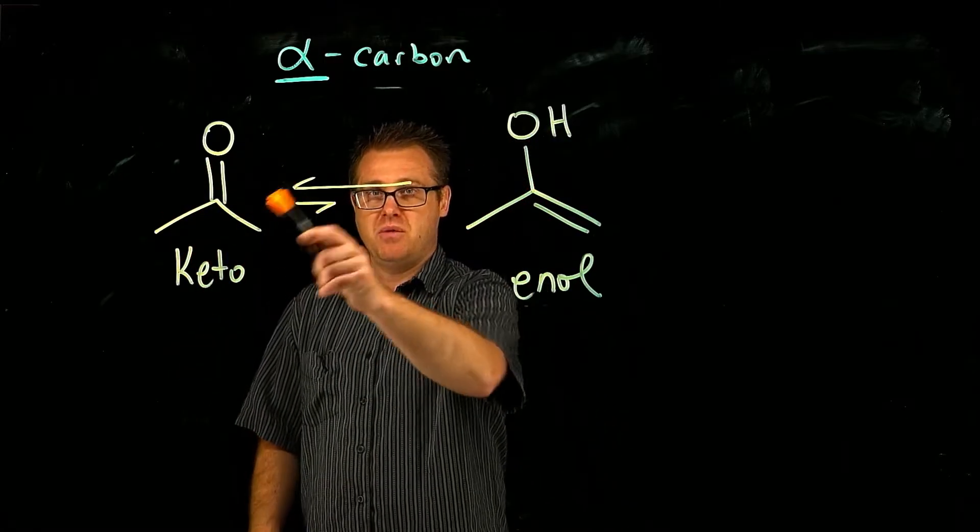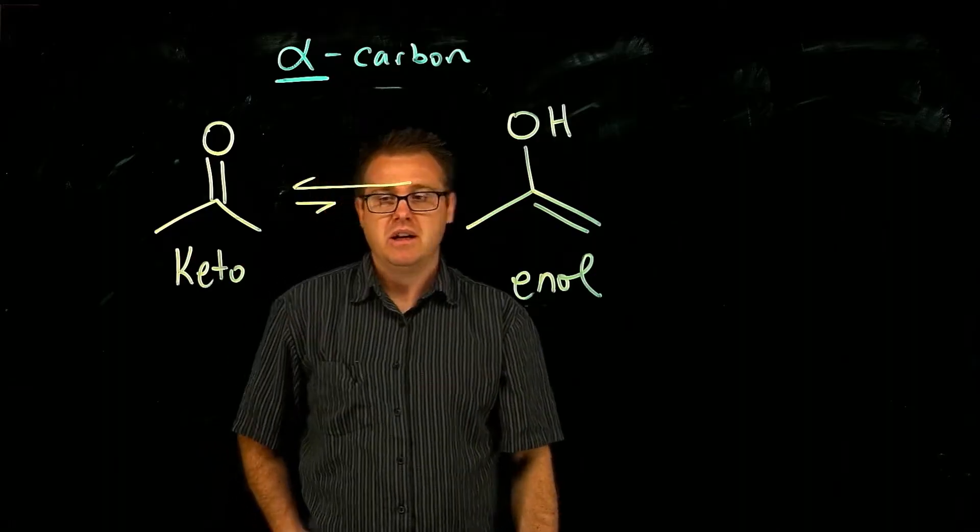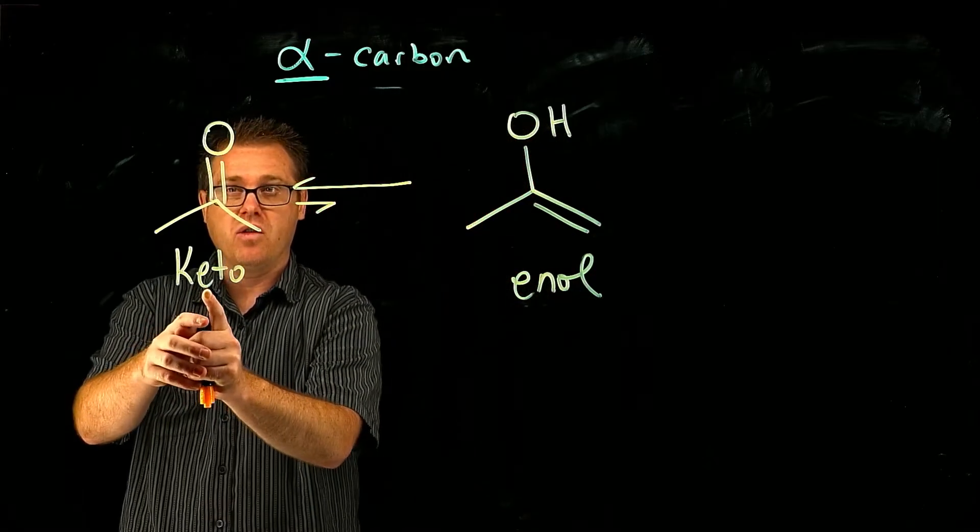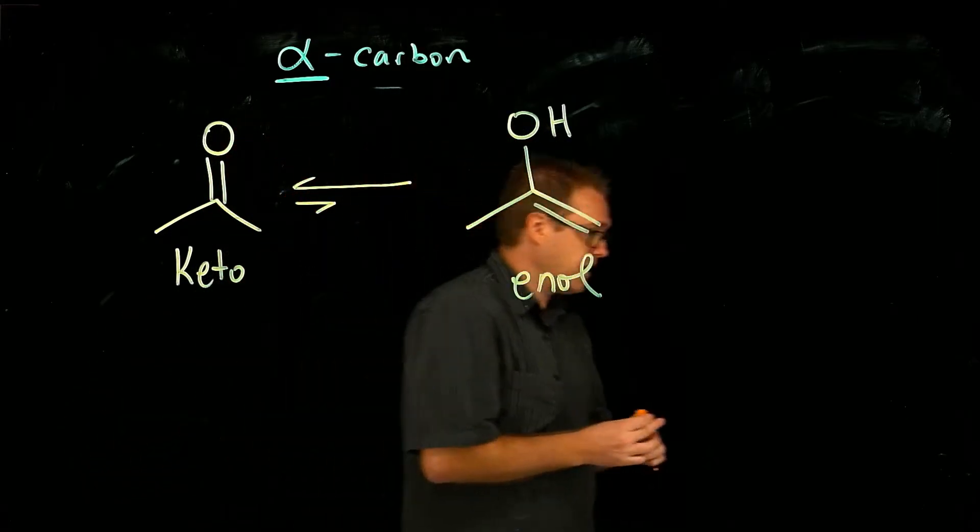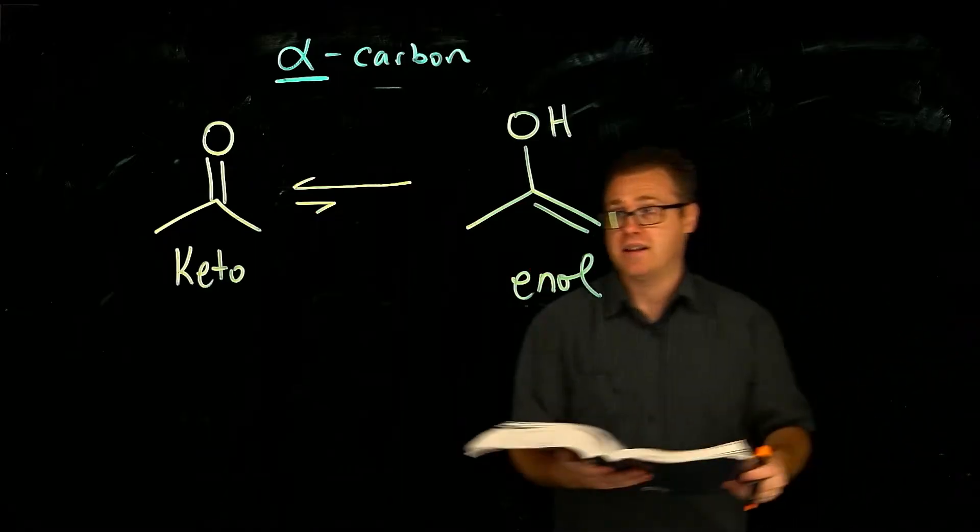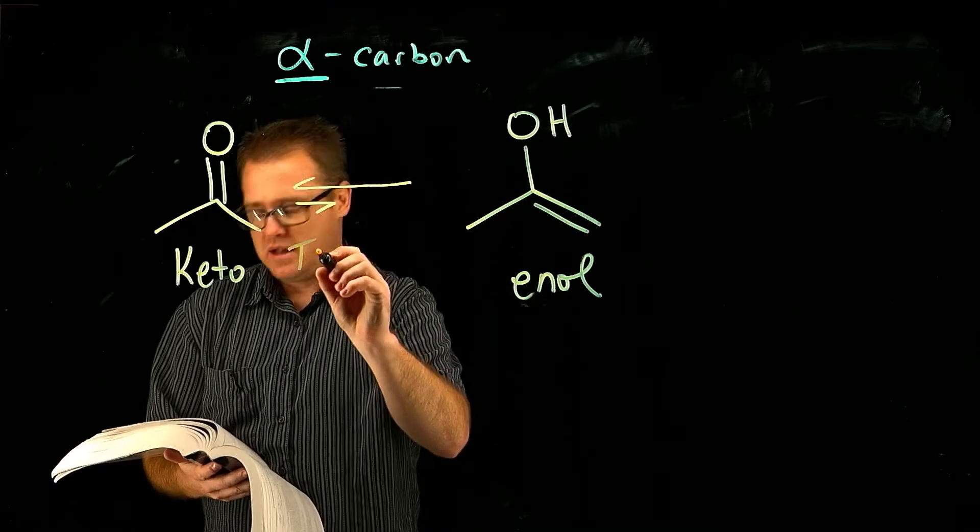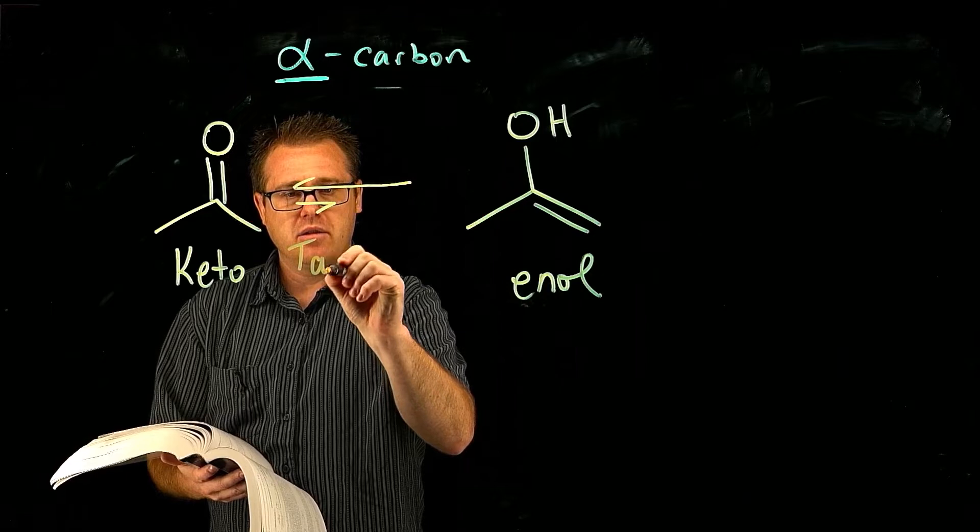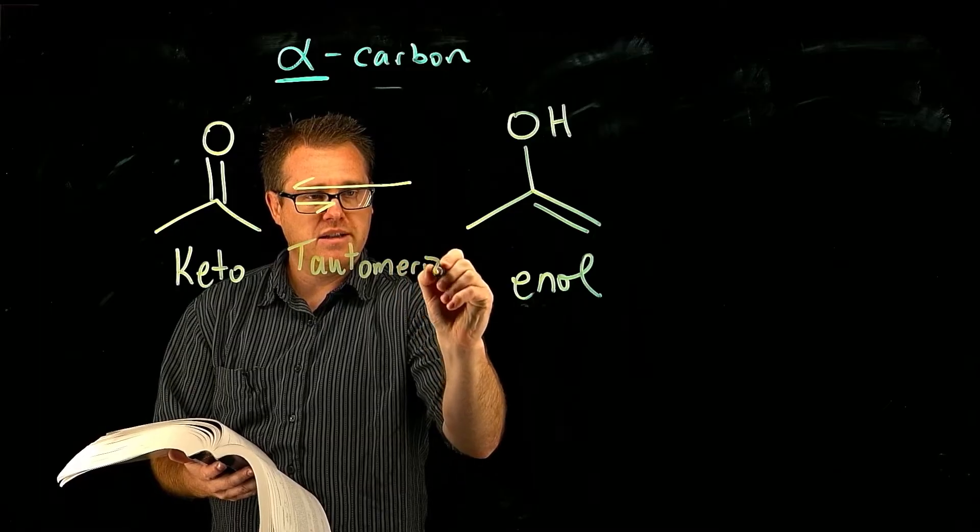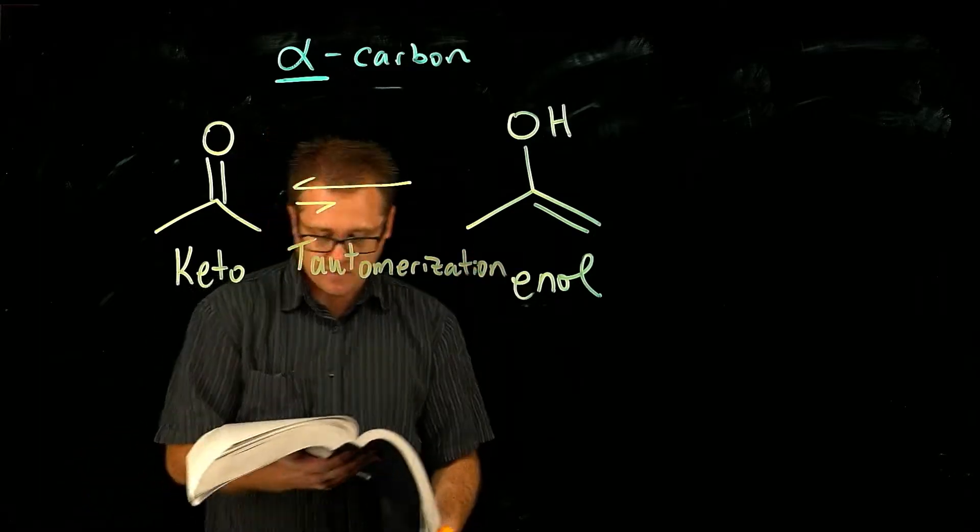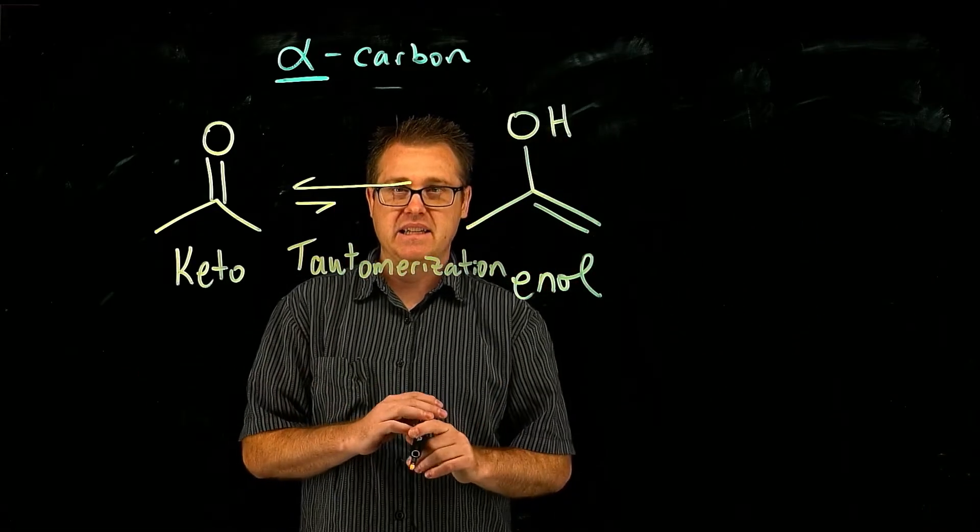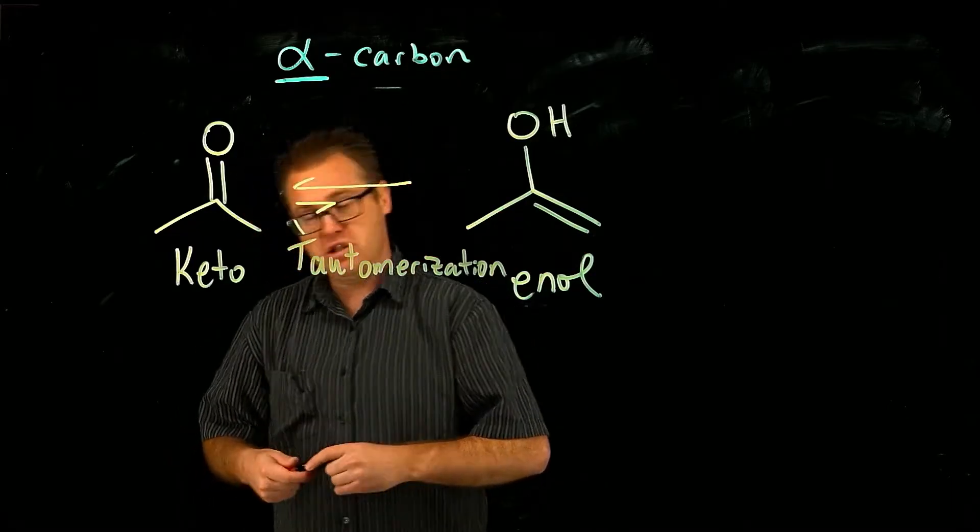Now, we need to be able to do the mechanism or the transformation between these two. So when you go from the keto to the enol, or the enol to the keto form, that is called tautomerization. Now let's find, so that process here, tautomerization.